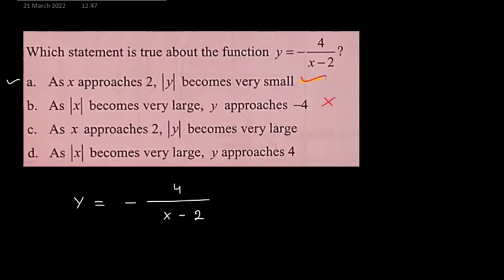As x approaches 2, then mod y becomes very large. Mod y means the positive value of y. As I am getting y as very small, but mod y will become very large. So this is again a correct statement.